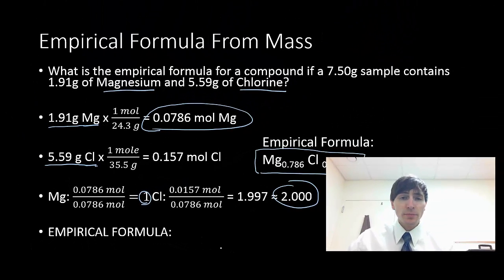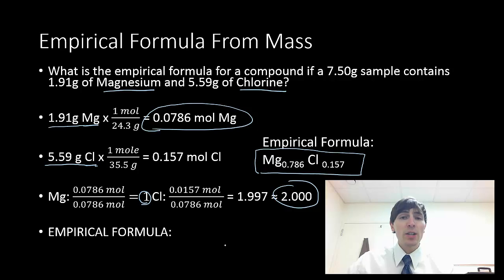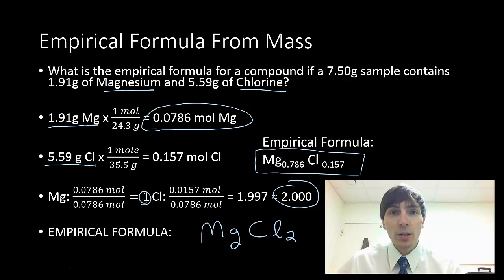This is step number 3. So I'm going to divide by the lowest number. It's going to be my moles of magnesium. So I'm going to take both of these numbers and divide by that lowest number. And when I do that, magnesium, I get an answer of 1. And chlorine, I get 1.997, which is basically 2. What this tells me is that the ratio of magnesium to chlorine is 1 to 2. There's my empirical formula, MgCl2.